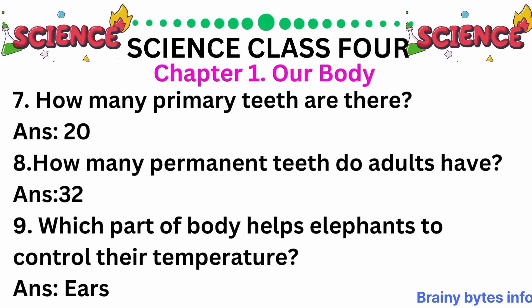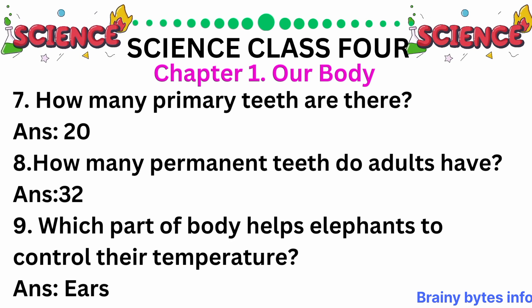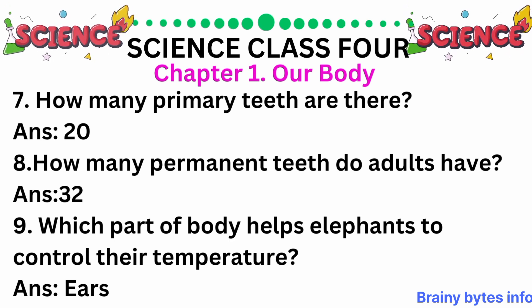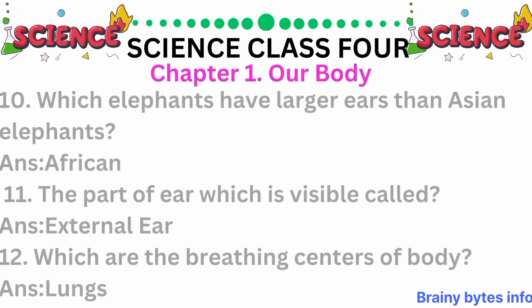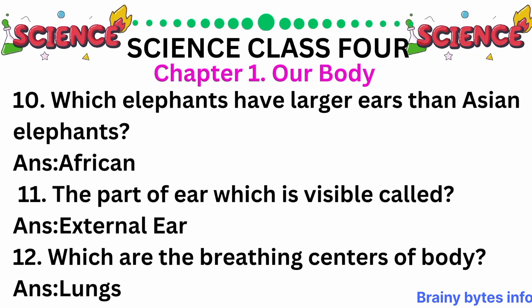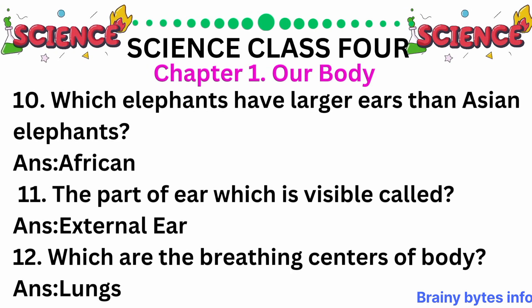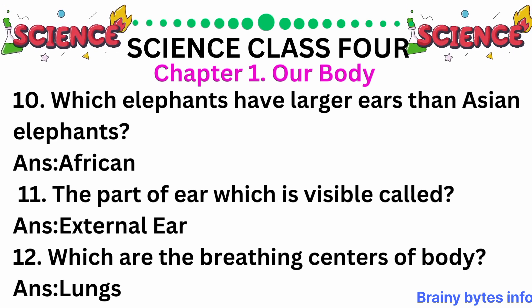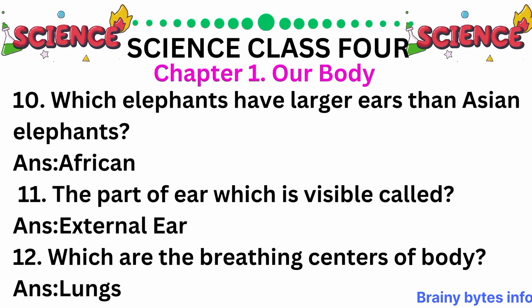Which part of the body helps elephants to control their temperature? Ears. Which elephants have larger ears than Asian elephants? African. The part of the ear which is visible is called the external ear.